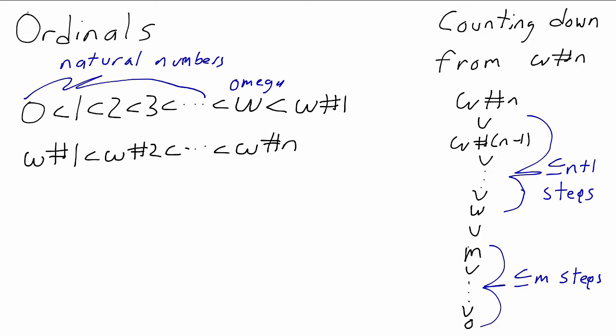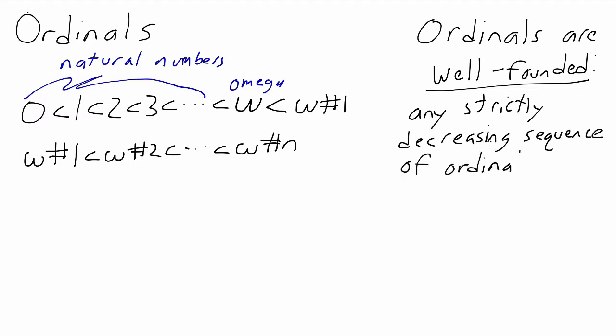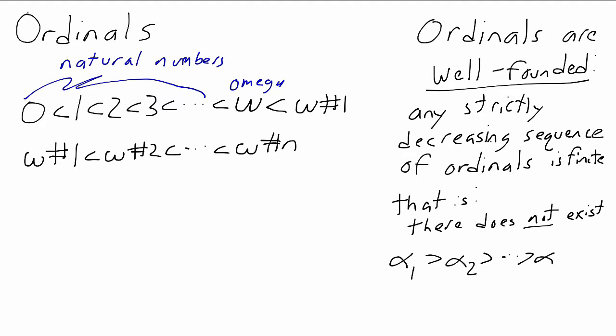The essential property here is that even though these ordinals can be infinite, they can only decrease finitely many times. There are infinitely many numbers below omega, but when we decrease from omega, we have to pick a specific finite number to decrease to — there's no omega minus 1, no previous number. The ordinals are well-founded, and that exactly means any strictly decreasing sequence of ordinals is finite. Any sequence that keeps decreasing has to eventually stop, and that's exactly what we would want in the values of a timer.